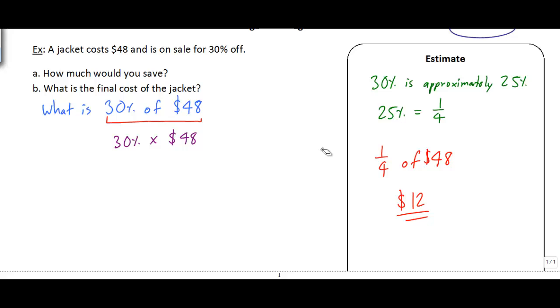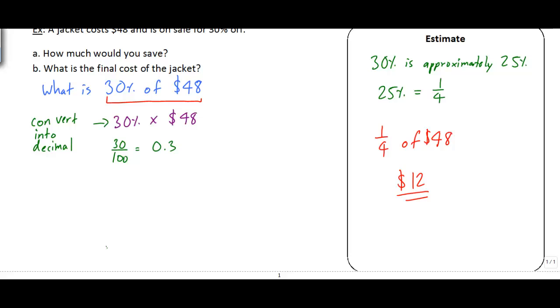So I need to multiply 30% times 48. But remember that percent represents a ratio or a fraction or a decimal. So I can't just multiply 30 times 48. I need to convert it into a decimal first. So 30% as a decimal, I know that's going to be 30 over 100, which is equal to 0.3. So really what this question is asking me first off is what is 0.3 times 48?